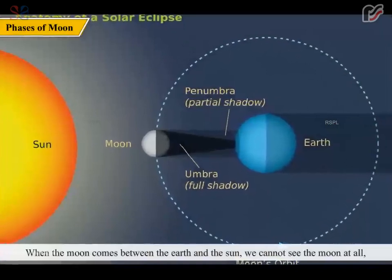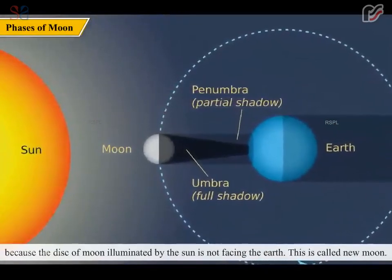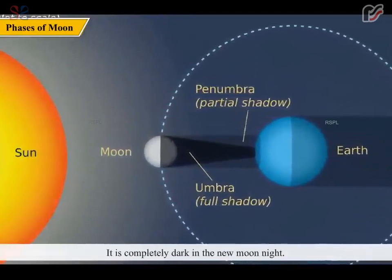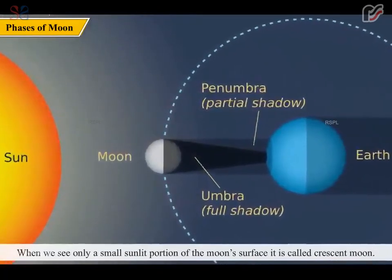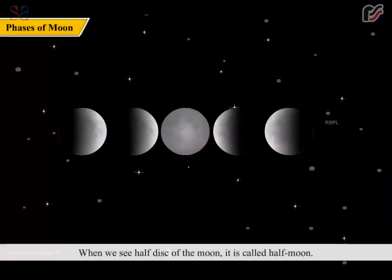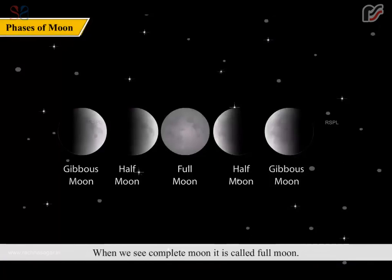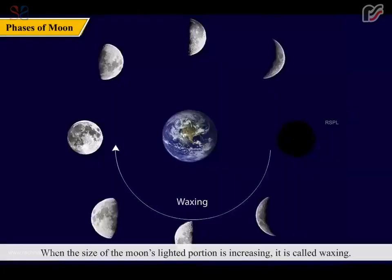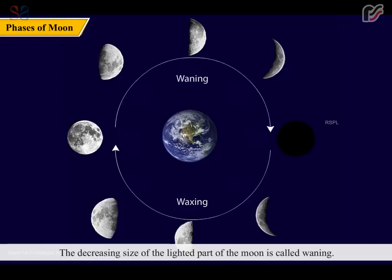When the Moon comes between the Earth and the Sun, we cannot see the Moon at all because the disk of the Moon illuminated by the Sun is not facing the Earth. This is called New Moon — it is completely dark on a New Moon night. When we see only a small sunlit portion of the Moon's surface, it is called Crescent Moon. When we see half the disk of the Moon, it is called Half Moon. When we see more than half of the Moon, it is called Gibbous Moon. When we see the complete Moon, it is called Full Moon. When the size of the Moon's lighted portion is increasing, it is called Waxing. After Full Moon Day, the cycle reverses and the size decreases, passing through Gibbous Moon, Half Moon, Crescent Moon, and back to New Moon. The decreasing size of the lighted portion of the Moon is called Waning.